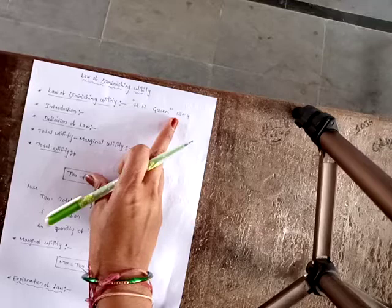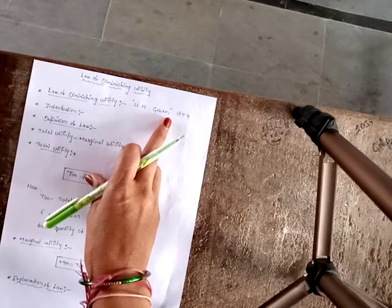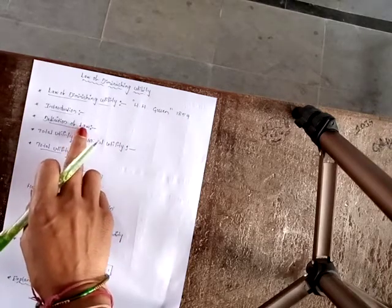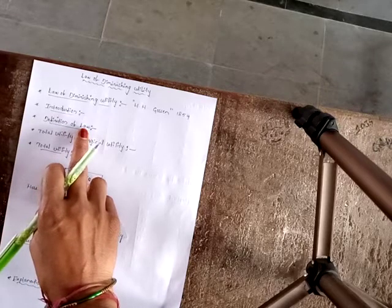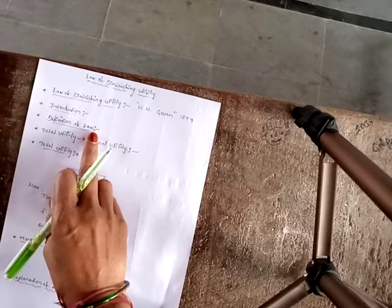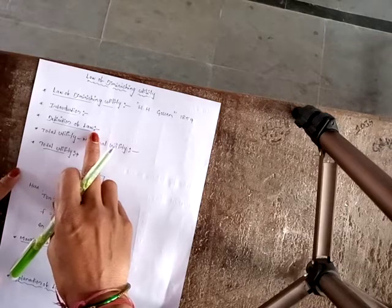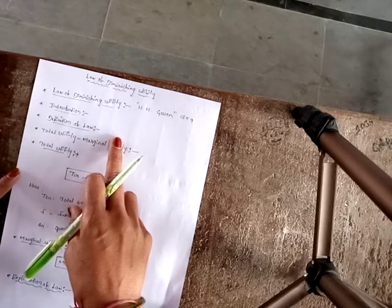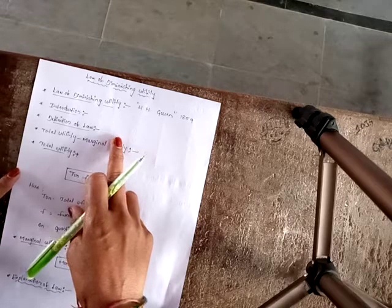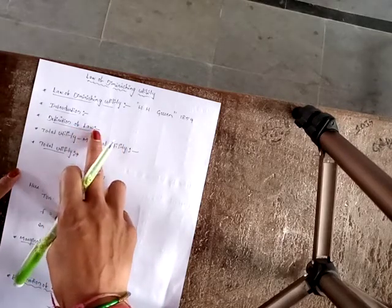Later, it was popularized and analyzed by Alfred Marshall. Marshall, in his definition of the law, stated: the additional benefit which a person derives from a given increase of his stock of a thing diminishes with every increase in the stock that he already has. — Alfred Marshall.